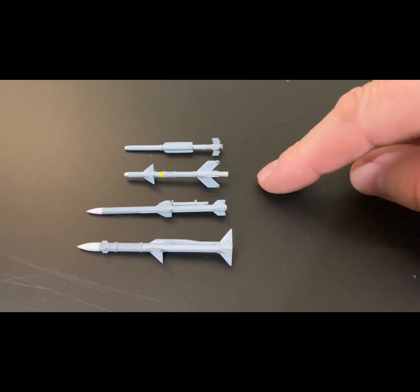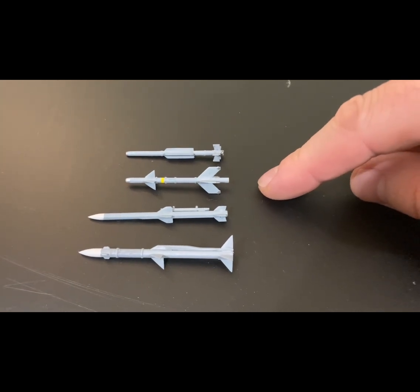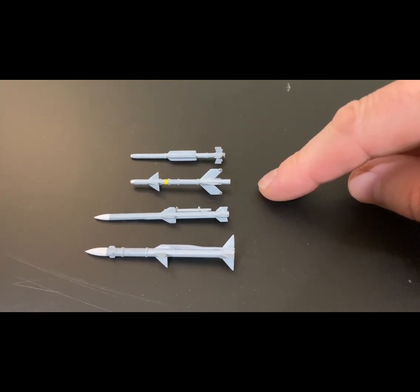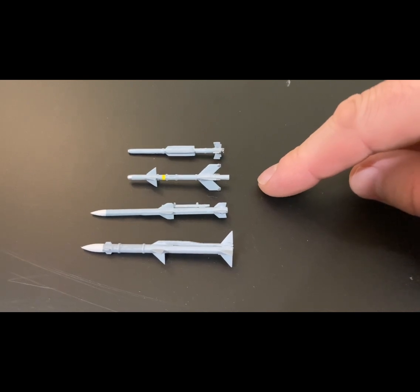This is apparently now cued to a helmet-mounted sight, making it extremely deadly, and it can pull 35 G's apparently, which is quite a lot of G's.